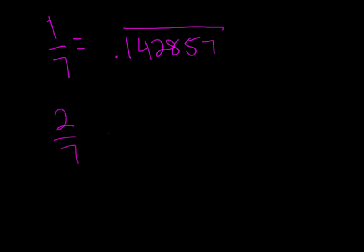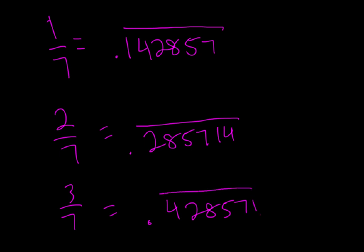Two-sevenths is equal to 0.285714 recurring. Three-sevenths is equal to 0.428571 recurring. See the pattern here?